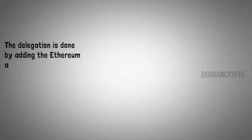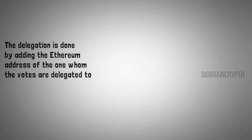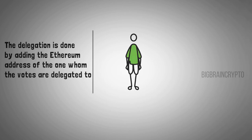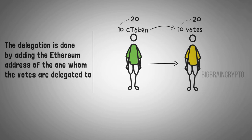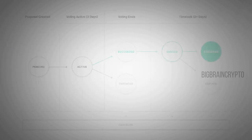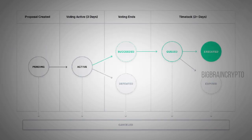Delegation is done by adding the Ethereum address of the person votes are delegated to. For example, if you hold 10 COMP tokens and provide a delegate address, 10 votes are delegated to that address while you still hold the 10 COMP tokens. When your balance increases to 20 COMP, their votes are automatically updated to 20. Even if you are a COMP holder, you still need to self-delegate in order to vote. Proposals are subject to a three-day voting period, and if a majority vote is received, the proposal is queued and implemented after two days.